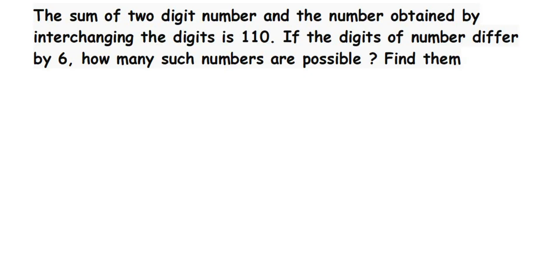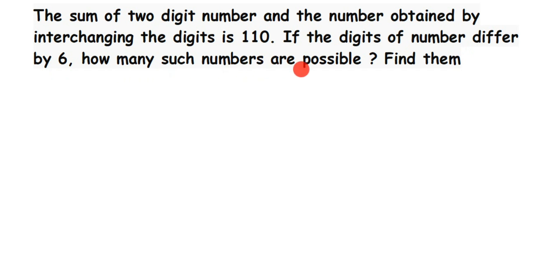Hey everyone, here is a question from linear equations in 2 variables. The question is: the sum of a 2-digit number and the number obtained by interchanging the digits is 110. If the digits of the number differ by 6, how many such numbers are possible? Find them.